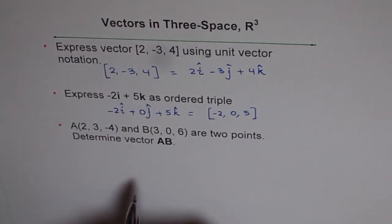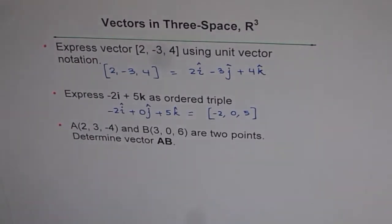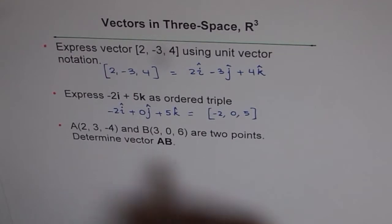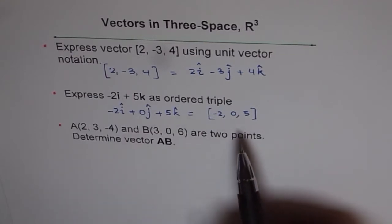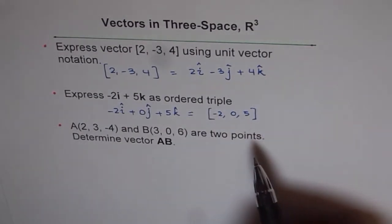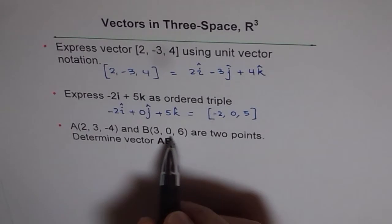At times in books, you will see a within brackets as (2, 3, -4) also representing a vector. Well, the idea there is that they do explicitly mention that's vector a, so there is no confusion. But in general, we will use the conventions of unit vectors or ordered triples or representing them in matrix form. And we will reserve this for points, as a coordinate point.